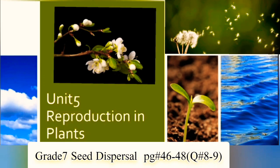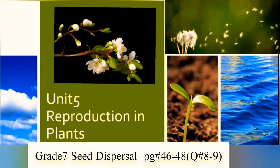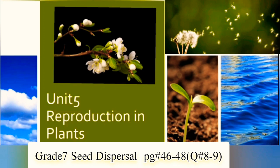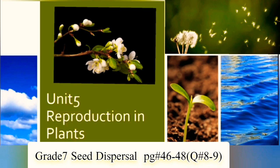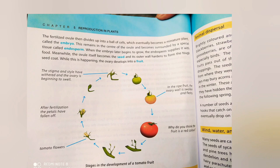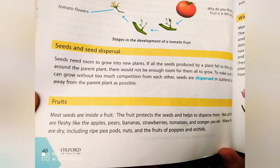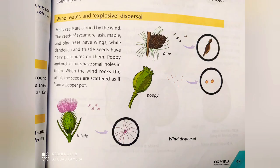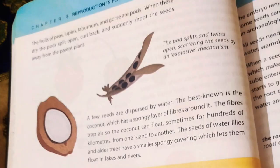Assalamu alaikum and very good morning, Grade 7. We will proceed to our next topic: dispersal of seeds — how plants disperse their seeds. It's page number 46. The top section tells the stages in the development of a tomato fruit. You have to draw those pictures and stages. It also covers what seeds and fruits are, and how fruits are dispersed by animals, wind, water, and explosive mechanisms.